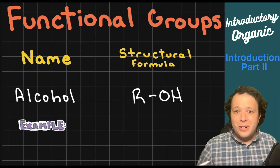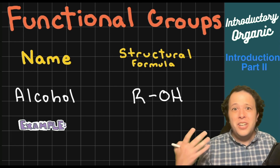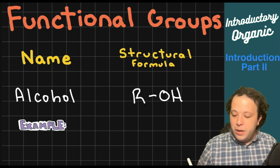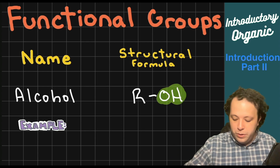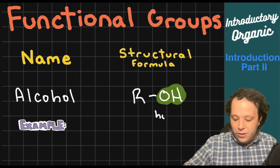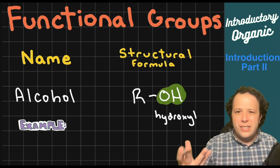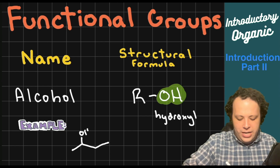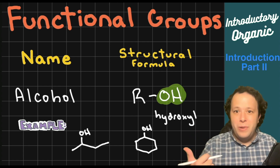Alcohols are a common functional group we see in everyday life. Alcohols are always denoted by the OH group — your hydroxyl group. Whether I have a chain with an OH on it or a ring structure with an OH on it, that hydroxyl attachment tells you we have an alcohol.